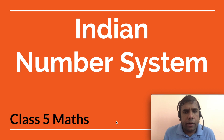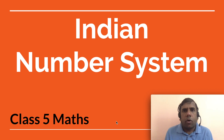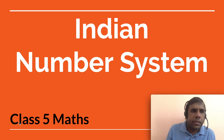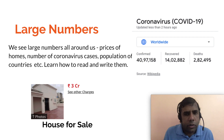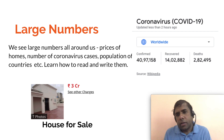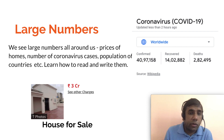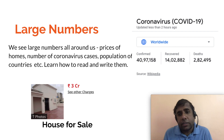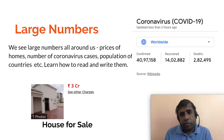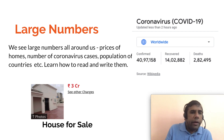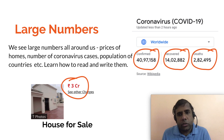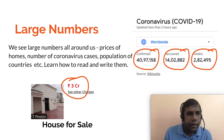Today's topic is the Indian number system for Class 5 mathematics. We see large numbers around us everywhere — houses for sale that cost a lot, the number of coronavirus pandemic cases across the world. You get numbers that are 7, 8, or 9 digits, typically counted as lakhs, crores, or tens of crores. So how do we read and write these numbers?